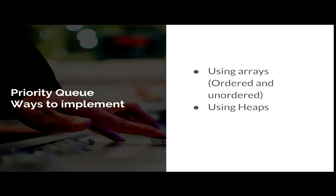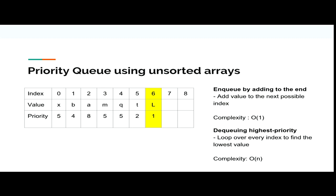Now I'll be talking about two ways to implement Priority Queue: using arrays, which can be ordered or unordered, as well as using heaps. The first way is to use unordered arrays. Imagine a person who comes into the ER — they are added to the end of the queue, which is what we call enqueuing. The complexity of enqueuing is O(1) since they're added straight to the last position. However, if you want to find the person with the highest priority, they have to compare with each and every element in the array, which takes a complexity of O(N).